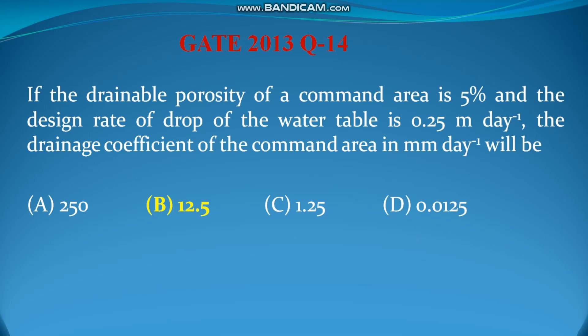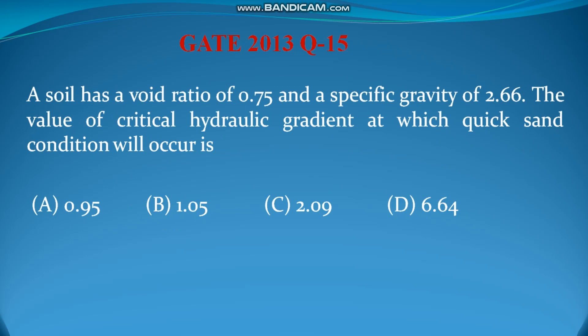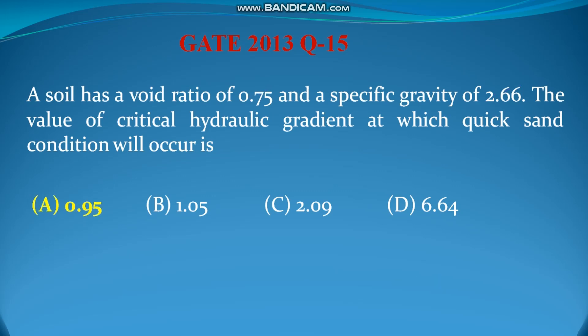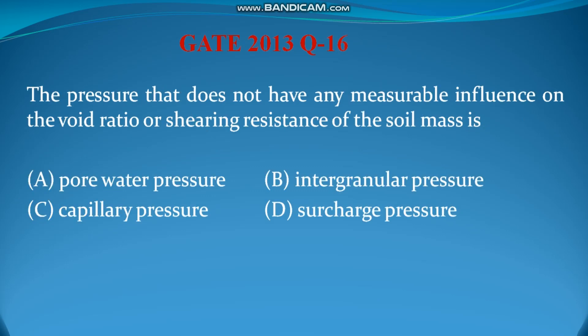Question number 15: a soil has a void ratio of 0.75 and a specific gravity of 2.66. The critical hydraulic gradient for quicksand condition uses the formula ic = (G - 1) / (1 + e). Substituting: ic = (2.66 - 1) / (1 + 0.75) = 1.66 / 1.75 = 0.95. Therefore the answer is 0.95.